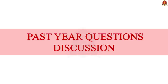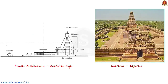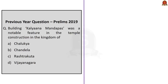Today we have chosen two important questions from the previous year preliminary examination. These two questions were asked in the 2019 preliminary exam and both are related to art and culture. Discussing them will be very helpful for your preliminary preparation. Now look at the first question: 'Building Kalyana Mandapas was a notable feature in the temple construction in the kingdom of...'